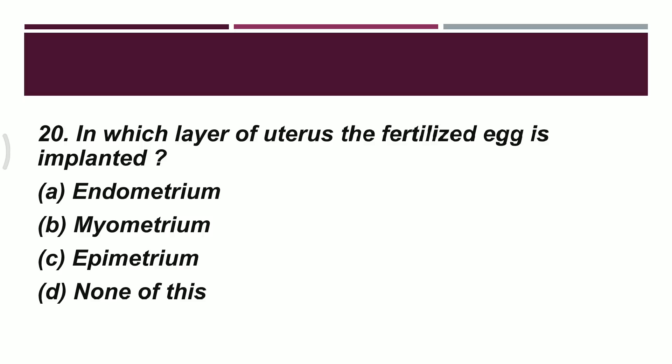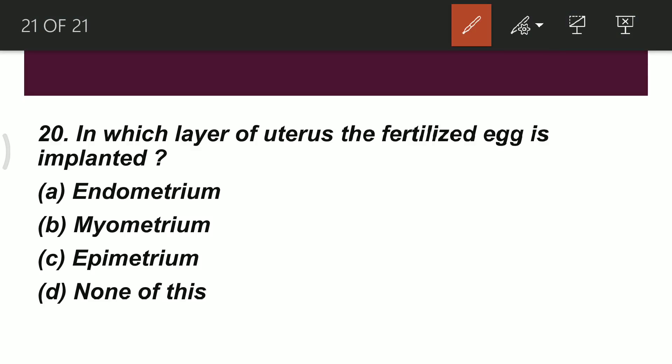The last question: in which layer of the uterus is the fertilized egg implanted? The uterus has three layers — perimetrium (outermost), myometrium, and endometrium (innermost). Option A: endometrium. Option B: myometrium. Option C: epimetrium. Option D: none of these. The correct option is A — endometrium — the blastocyst implants into the endometrium of the uterine wall.